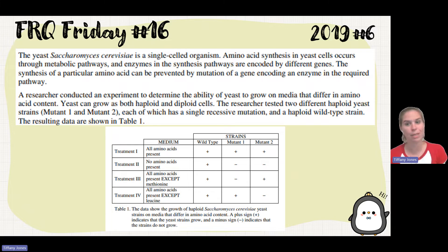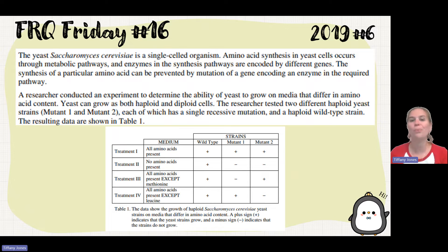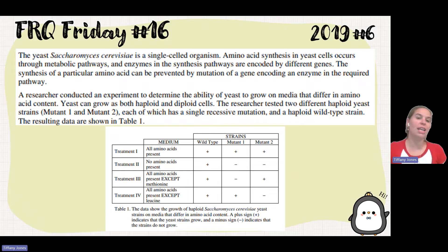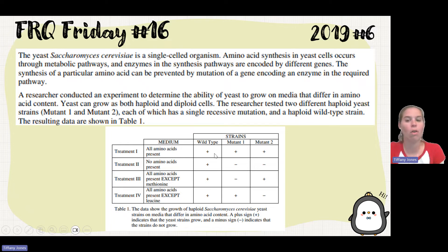Yeast can grow as both haploid and diploid cells. A researcher tested two different haploid yeast cells, mutant one and two, each of which has a single recessive mutation, and a haploid wild-type strain. The resulting data is shown in the table. In treatment one, which has all amino acids present, all of the yeast was able to grow. In treatment two, when there were no amino acids present, only wild-type was able to grow.